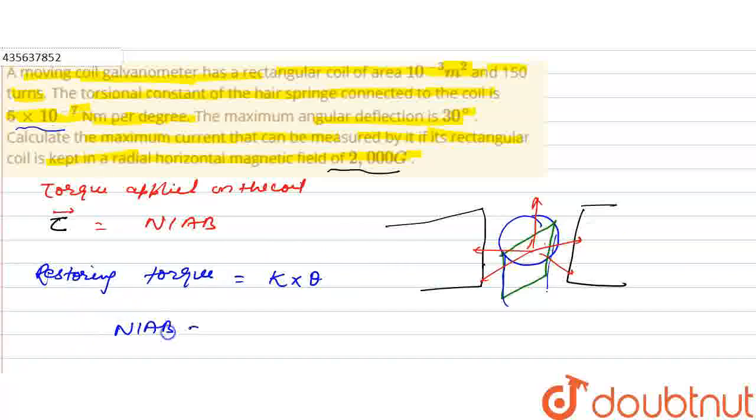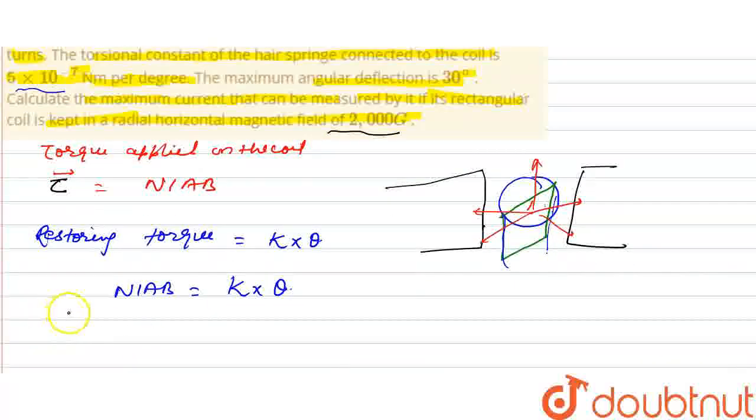NIAB equals k times theta. Now look at this: for current I, to find maximum current, I equals k times theta divided by NAB.